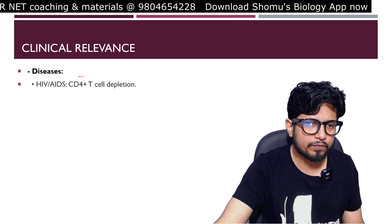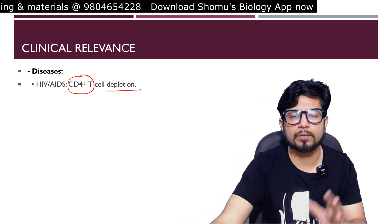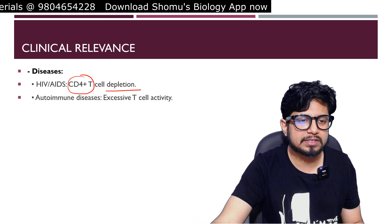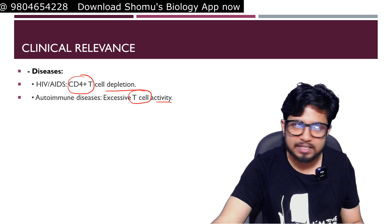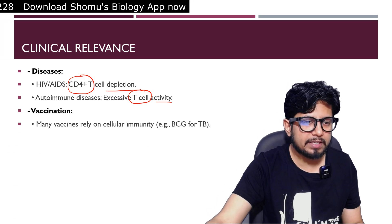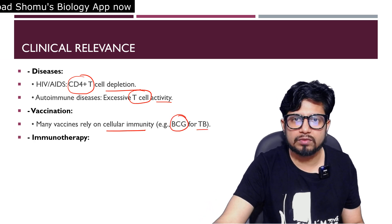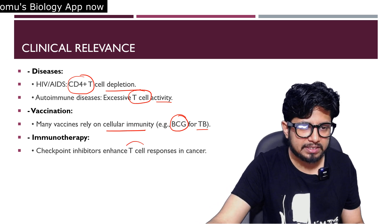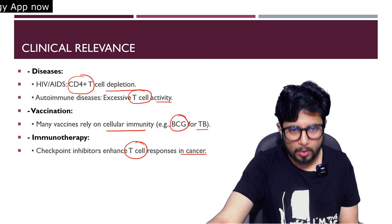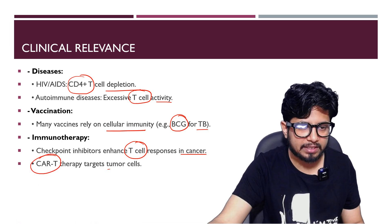Clinically, in HIV/AIDS, CD4-plus T cell depletion is clearly observed. Autoimmune diseases involve excessive T cell activity, causing more tissue damage. In vaccination, many vaccines rely on cellular immunity, such as the BCG vaccine for tuberculosis. In immunotherapy, checkpoint inhibitors enhance T cell responses against cancer, and CAR-T cell therapy targets tumor cells directly.